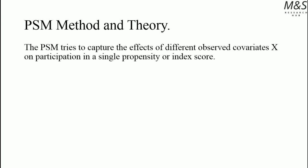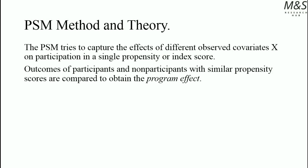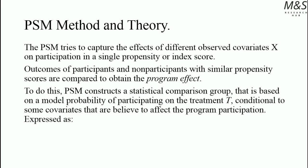Propensity score matching tries to capture the effects of different observable covariates on participation in a single propensity or index score. Outcomes of participants and non-participants with similar propensity scores are compared to obtain the program effect. Propensity score matching constructs a statistical comparison group based on the model probability of participating in treatment T, conditional on some covariates believed to affect program participation. The probability and propensity score index is based on the chance of being a participant given some covariates X — the observational similar characteristics — allowing construction of the single propensity score index.